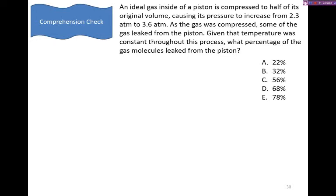Welcome back. So we have an ideal gas inside of a piston compressed to half its original volume, causing the pressure to increase from 2.3 to 3.6 atmospheres. As the gas was compressed, some of it leaked from the piston. Given that the temperature was constant, what percentage of the gas molecules leak from the piston? Since we're dealing with an ideal gas and we're talking about volumes, pressures, and temperatures, we're going to use the ideal gas law.